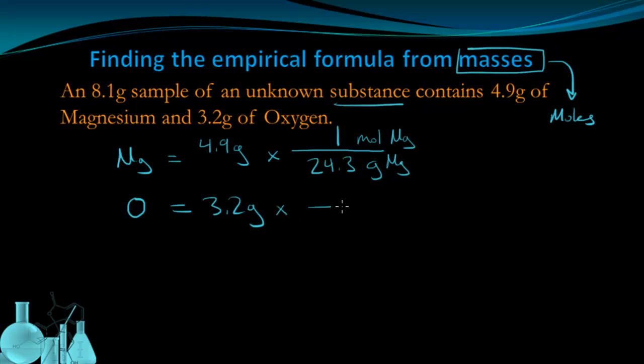For oxygen, I know that 1 mole of oxygen is 16 grams of oxygen, again from the periodic table. Having set up the conversion, I can now see that this is 0.2 moles of magnesium and this is 0.2 moles of oxygen.